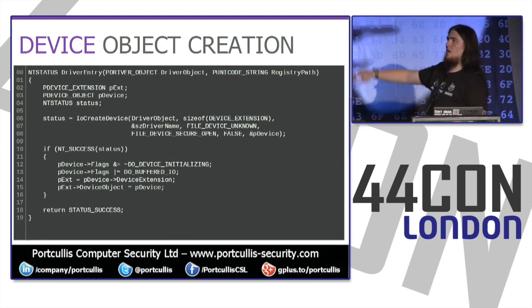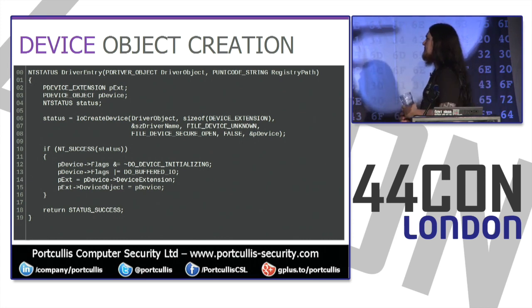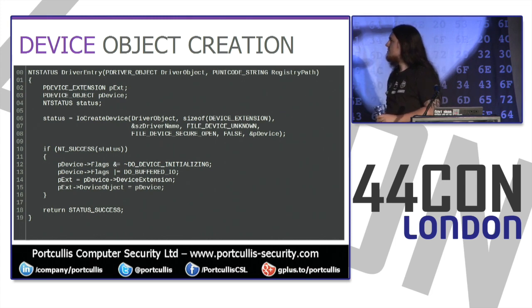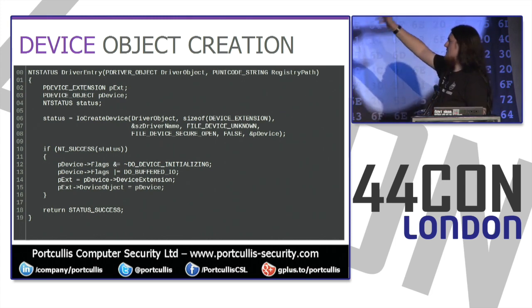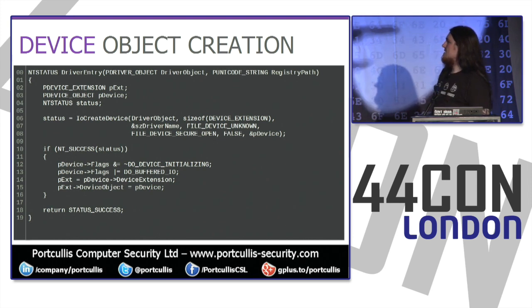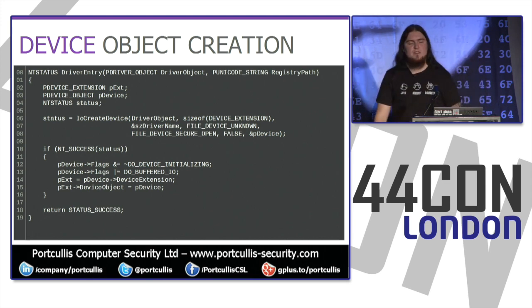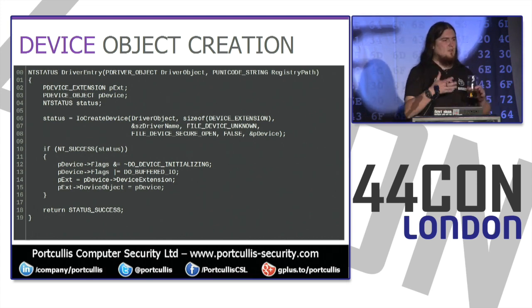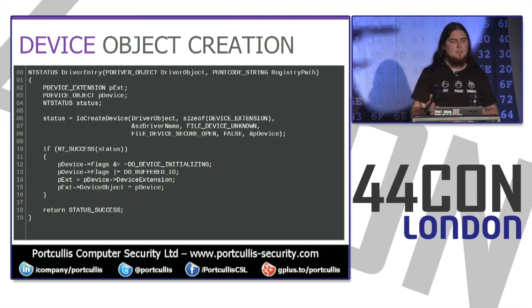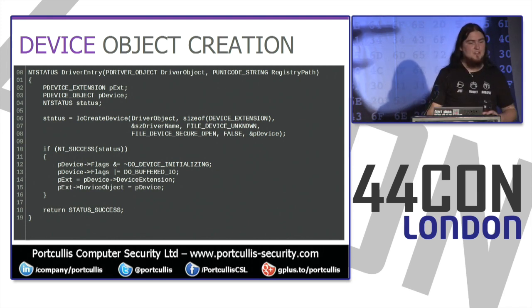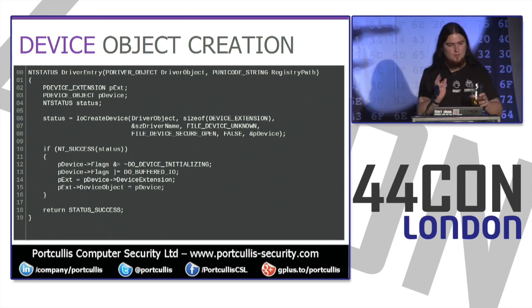This is the driver entry, which is like main in a C application. You get a driver object and the registry path. You call IoCreateDevice on the driver object and say you want to create a device with a particular name. Windows has this concept of the object manager — everything that is an object is managed in a hierarchy — and you can use WinObj to look at all these objects: devices, sessions, mutexes, semaphores, events, shared memory sections, named pipes.